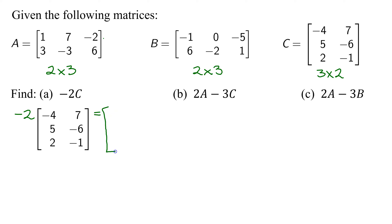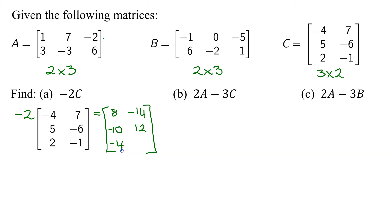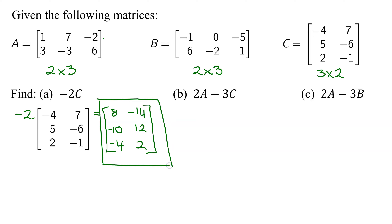So what we get is: negative two times negative four is positive eight; negative two times seven is negative fourteen; negative two times five is negative ten; negative two times negative six is positive twelve; negative two times two is negative four; and negative two times negative one is positive two. So this is the answer to part A — this is negative two times matrix C.